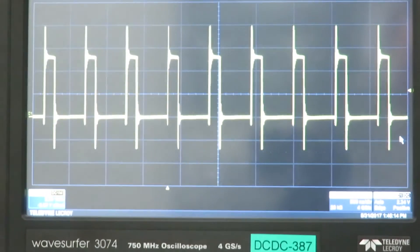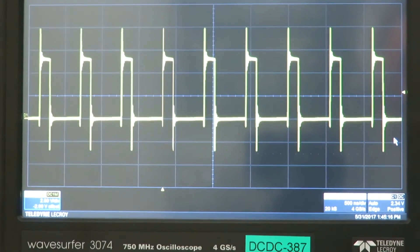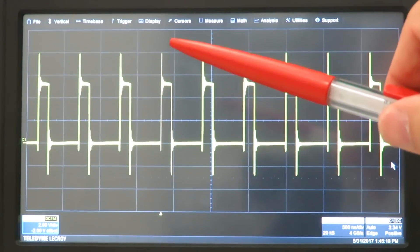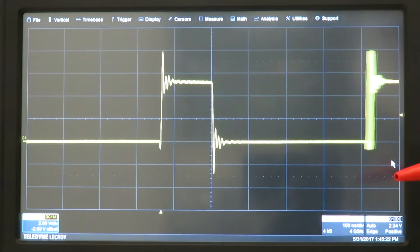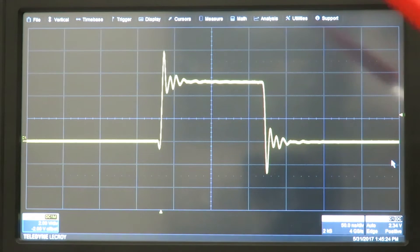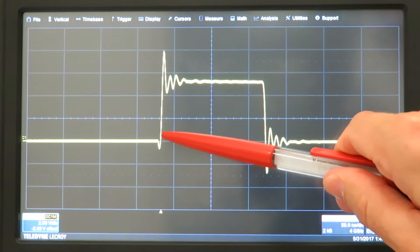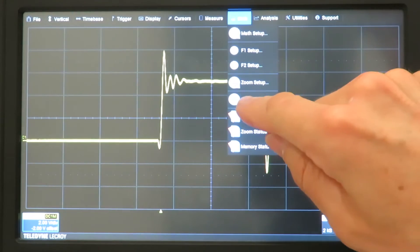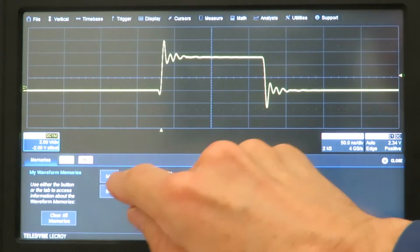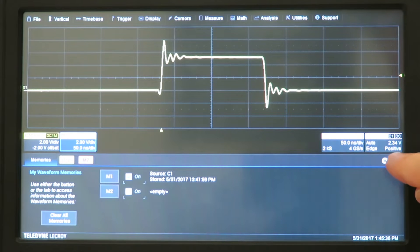So now let's have a look at the oscilloscope. You see the switching waveform here. Let's zoom in to the rising and falling edge. We have 2 volt resolution so we have roughly 2 volt overshoot and about 2 volt undershoot. Let's store this measurement so we can compare it with the improved measurement setup.